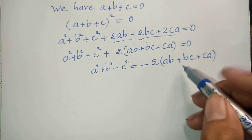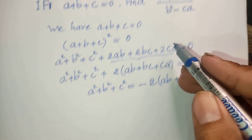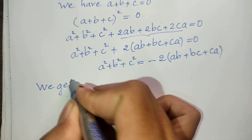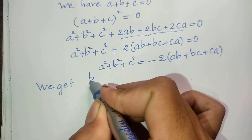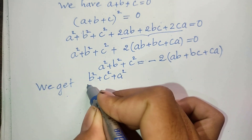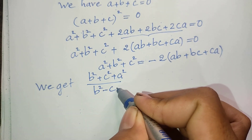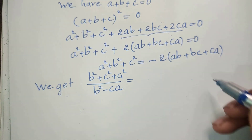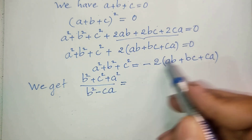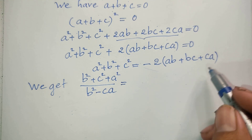Now I take this result and substitute it into the original expression. So the numerator a squared plus b squared plus c squared is replaced by negative 2 times ab plus bc plus ca, and we divide by the same denominator b squared minus ca.